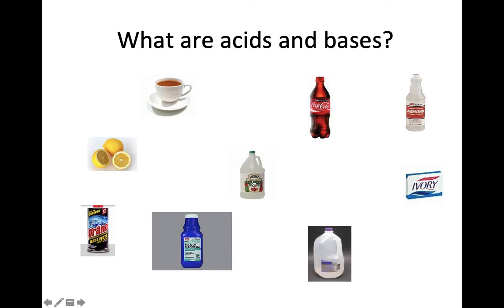So let's take a look at things that we have lying around the house that are acids and bases. It would be fun to check things with pH paper, but you can try it at home if you happen to have pH paper. And if you have a pool at home, you should know all about acids and bases because you check your pH in your pool. So, coffee and tea - acid. Lemons - acid. Drano - base. Milk of magnesia - base. It's an antacid.